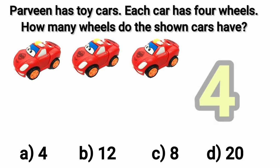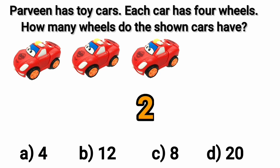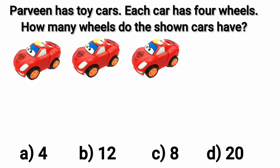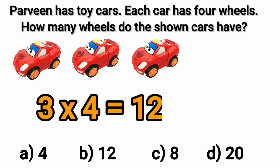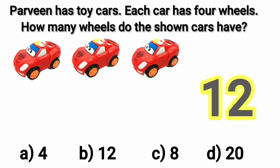So the number of wheels of two cars can be, yes, two multiplied by four. It is two fours are eight. So the number of wheels of three cars is three fours are twelve. Here is our answer. Three cars have twelve wheels. Option b is the right option here.